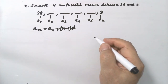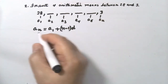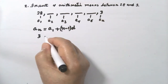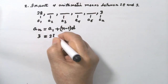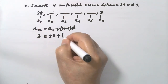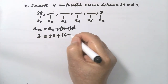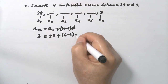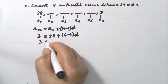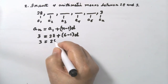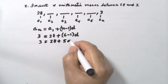Use the formula a sub n equals a sub 1 plus (n minus 1) times d, where d is the common difference. Substitute: a sub n is 3, and a sub 1 is 28. n is 6, so: 3 equals 28 plus (6 minus 1) times d, which gives 3 equals 28 plus 5d.